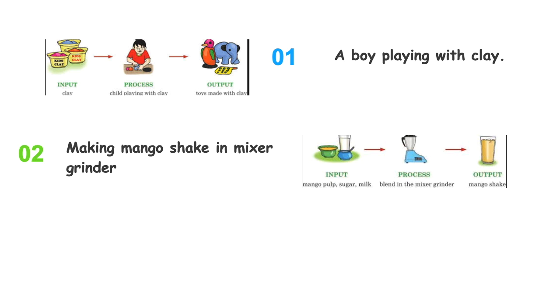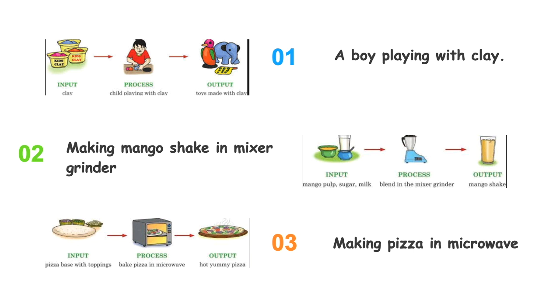The last example is of making a pizza in microwave. The pizza base with toppings is input or our raw material, and the process is baking the pizza in microwave. Finally, the output we will get is hot and yummy pizza.